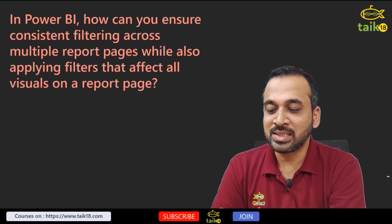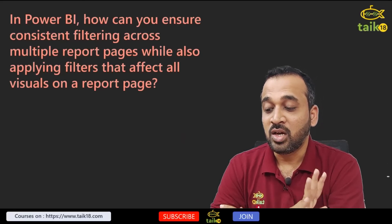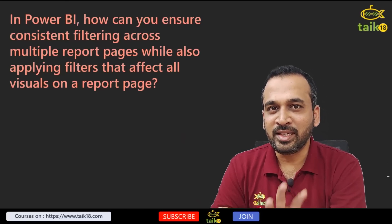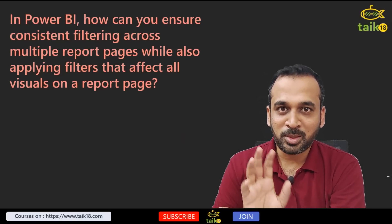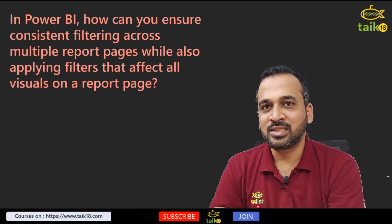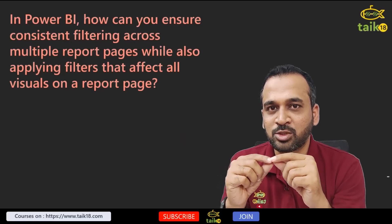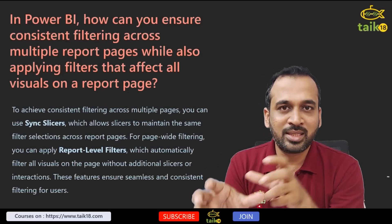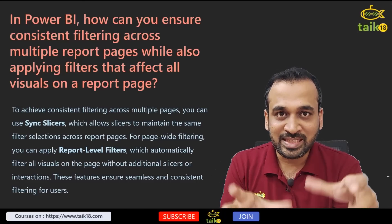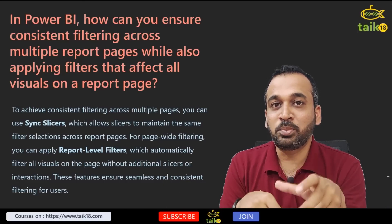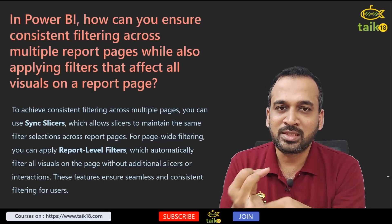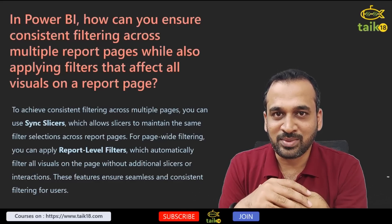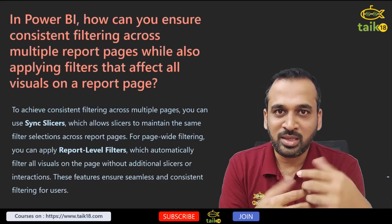In Power BI, how can you ensure consistent filtering across multiple report pages while also applying filters that affect all visuals on a page? There are two options I know — if you know more, let me know in the comments. First, you can use a sync slicer: add a slicer, go to the selection pane, and check the options to sync it to other pages. Second, you can use the report-level filter — we have visual-level, page-level, and report-level filters. The report-level filter applies to all pages.